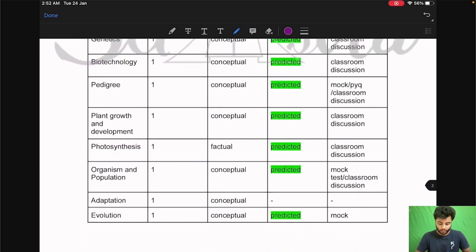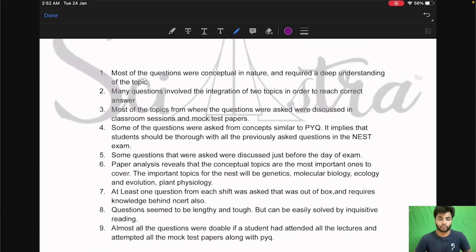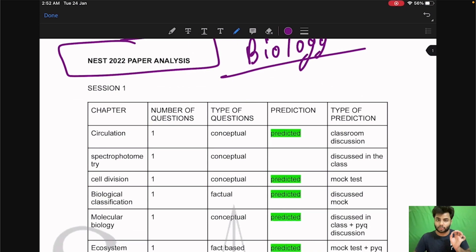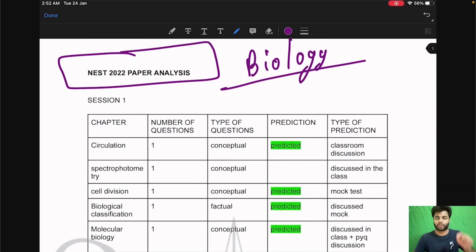After that I am going to tell you the conclusion that we can make out of this analysis. Now this whole PDF that you see here you can get for free in our sciastra.com website as well as sciastra app and if you have any other questions any doubts you can just write in the comments below and I will definitely answer them.